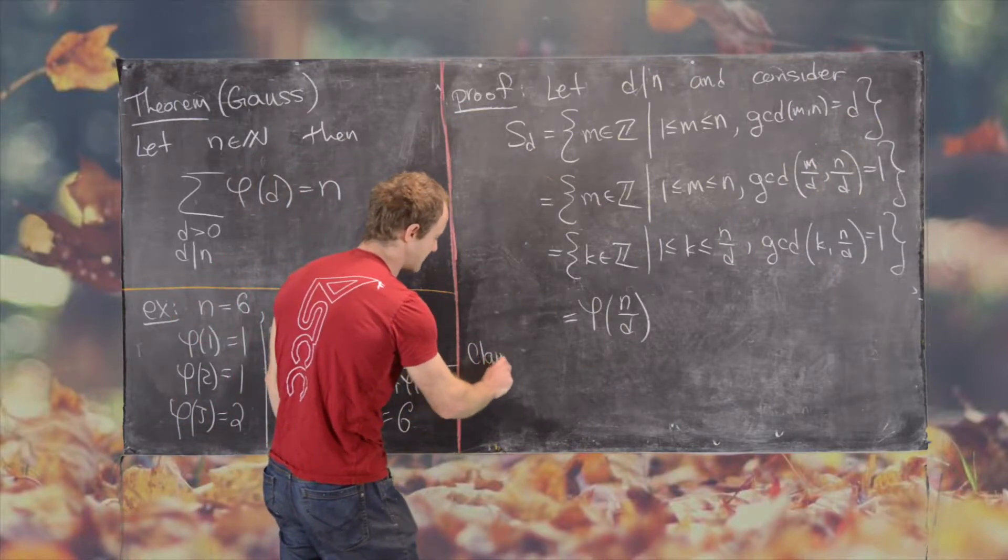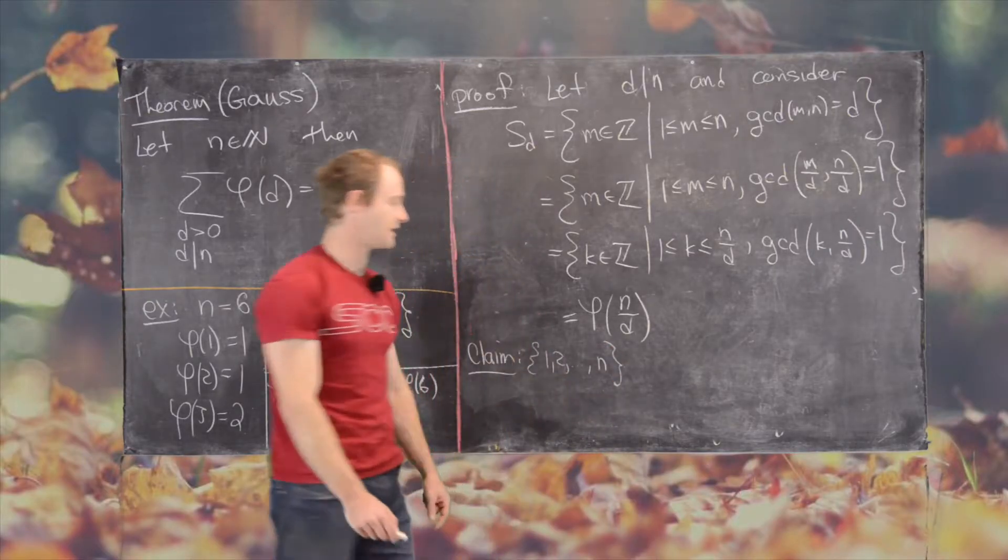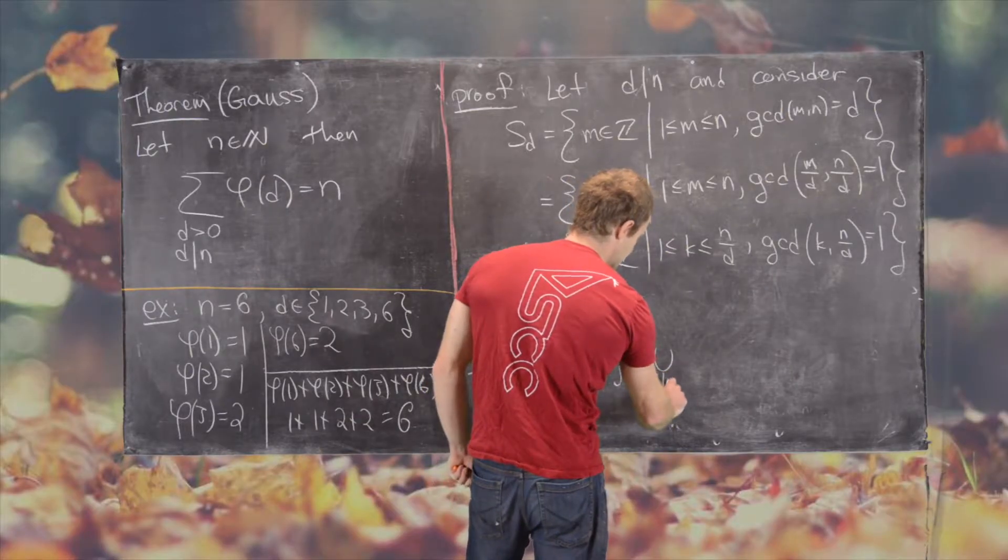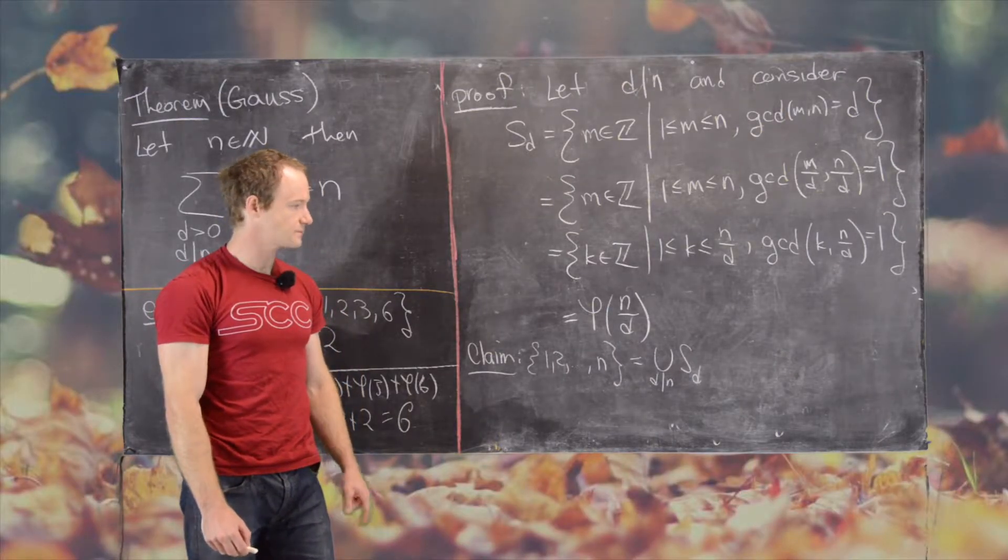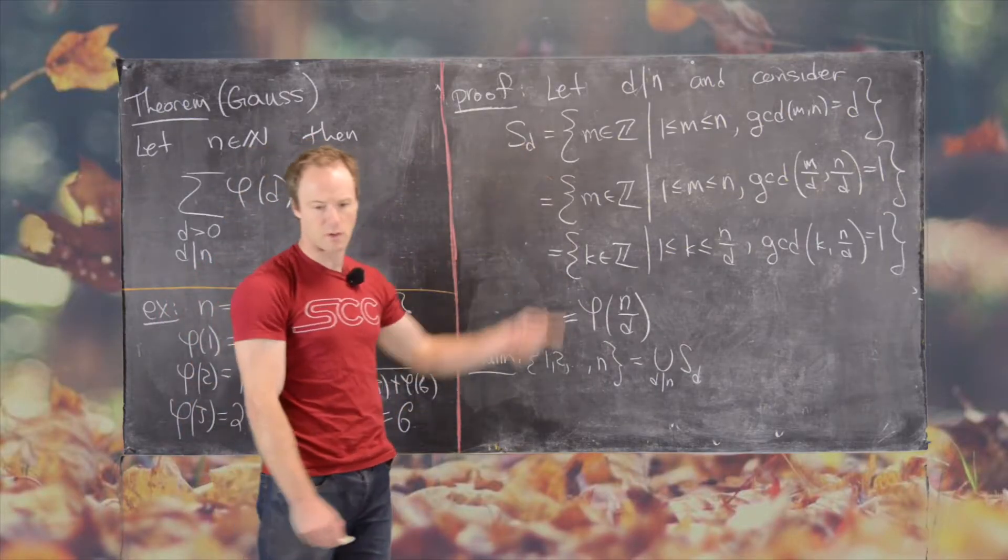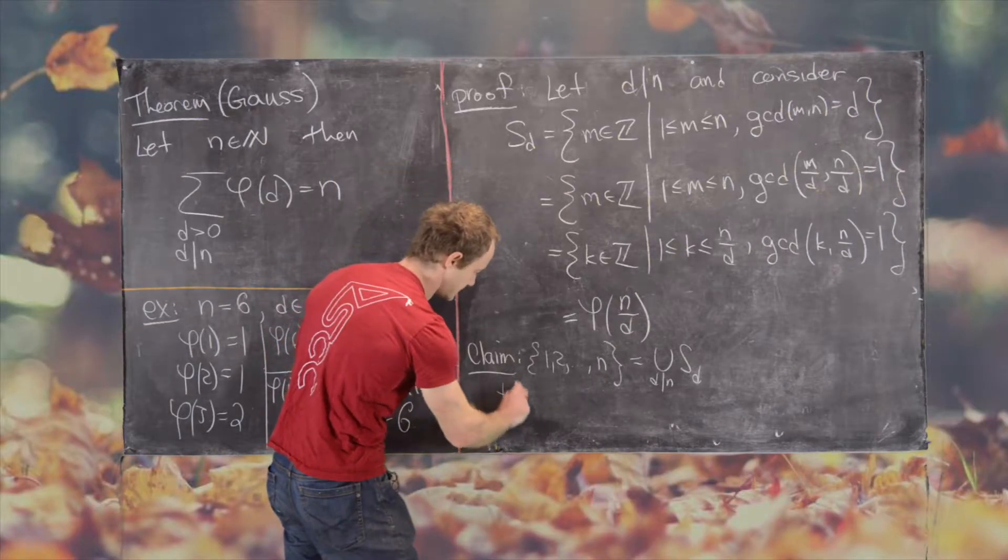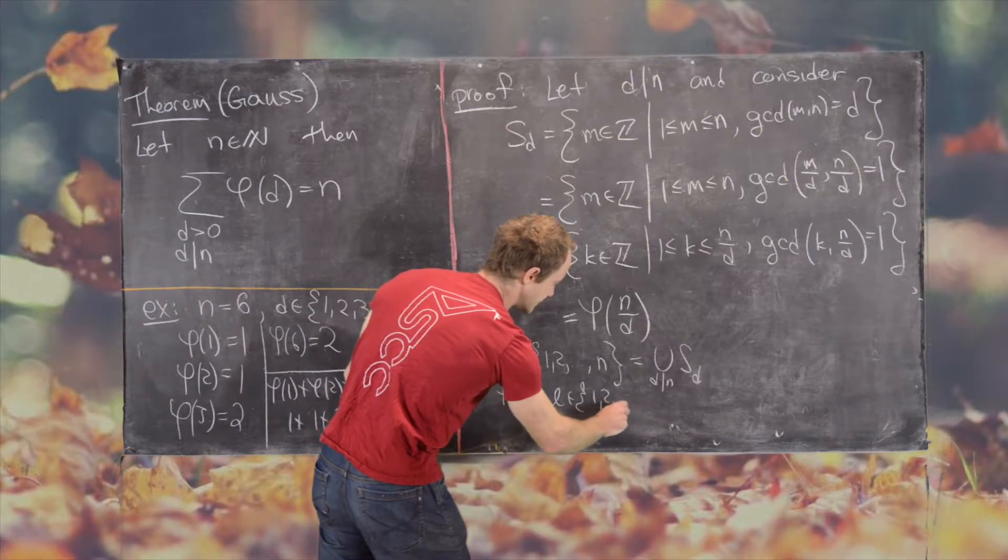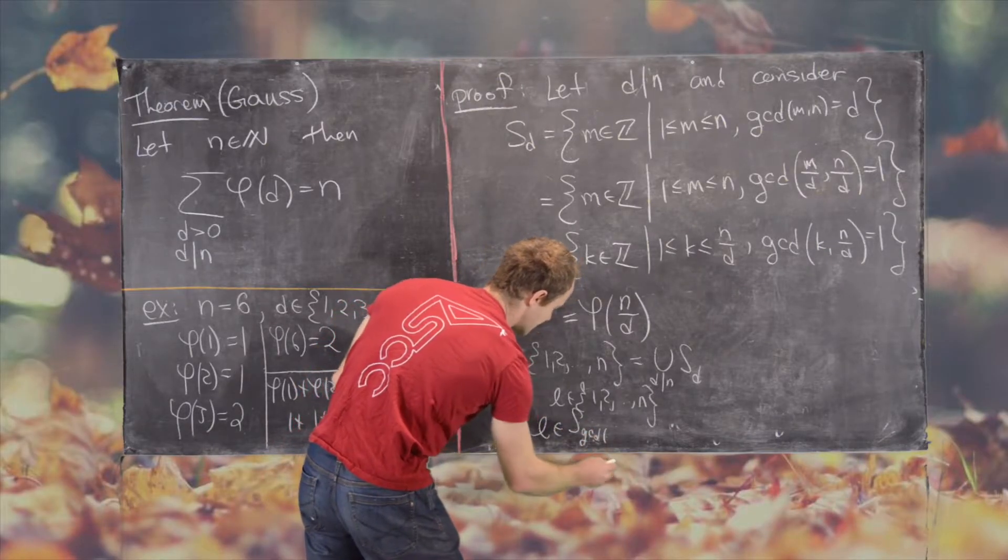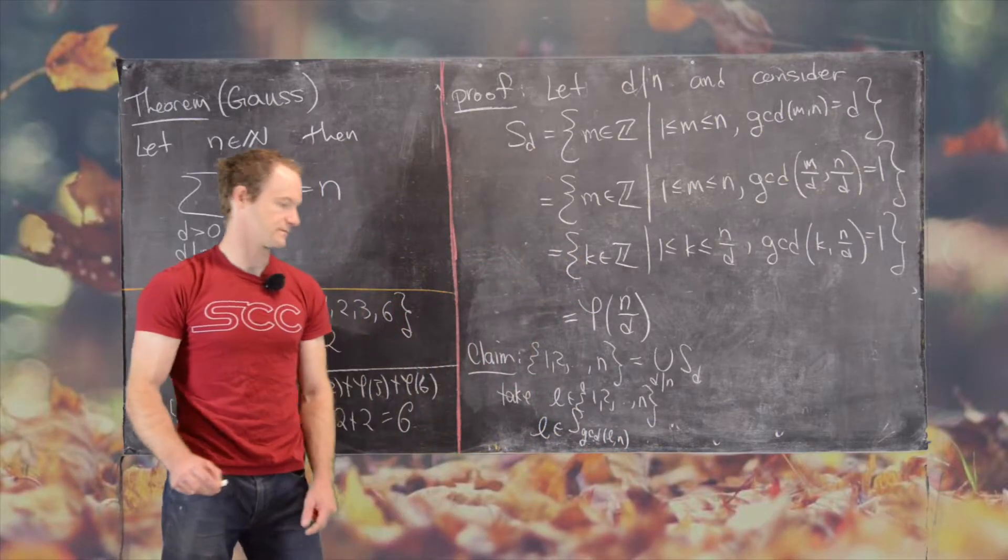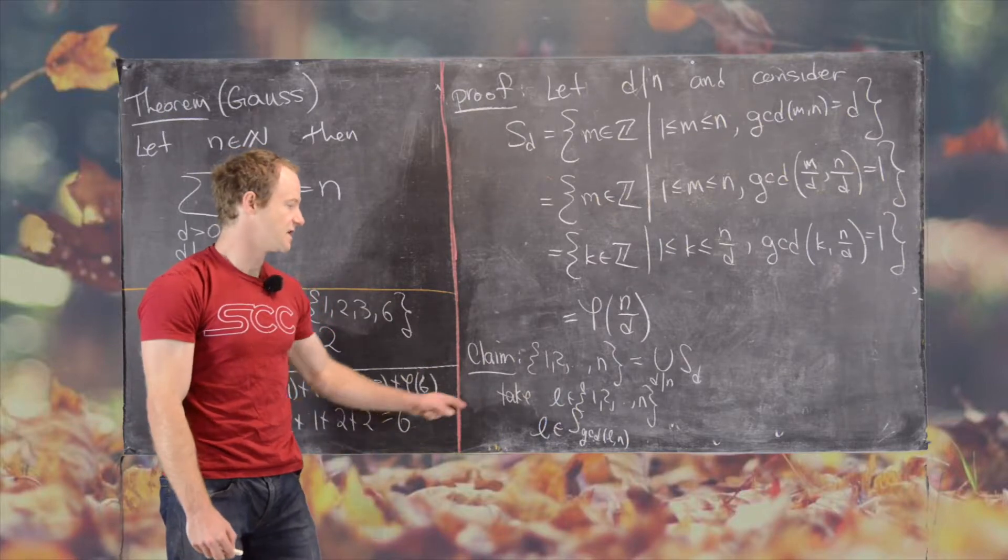And now we're going to look at the following claim. The set containing 1, 2 up to n is equal to the union of all the D that divide n of S sub D. So that should be pretty clear from what we did before. And that's because if you take L in this set 1, 2 up to n, notice that L is an element of S sub GCD of L and n. So we know that the GCD of L and n is a divisor of n. It's a common divisor of L and n, so in particular it's a divisor of n.